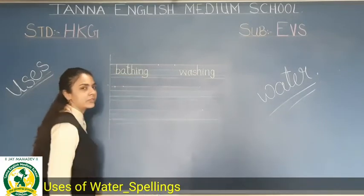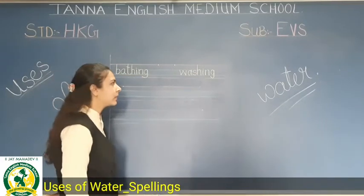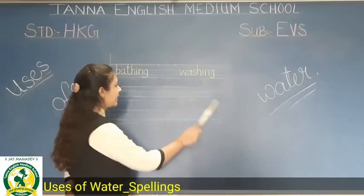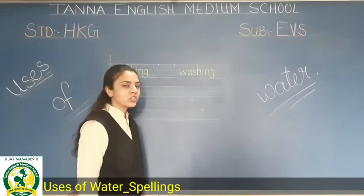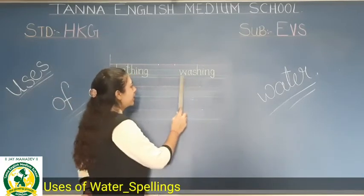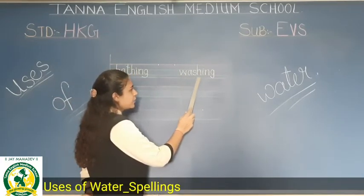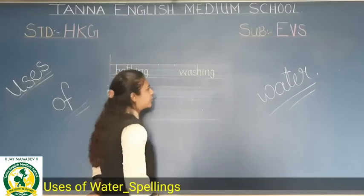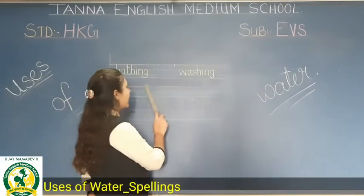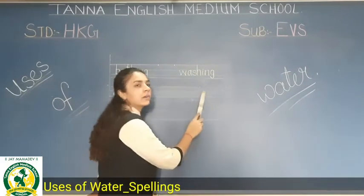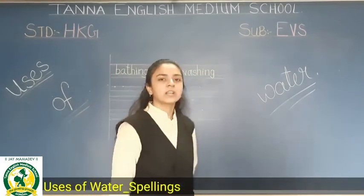The spelling is BATHING — B-A-T-H-I-N-G. And the next spelling is WASHING — W-A-S-H-I-N-G. So BATHING and WASHING.